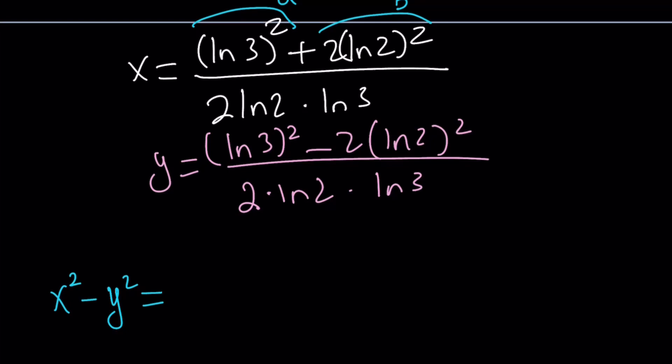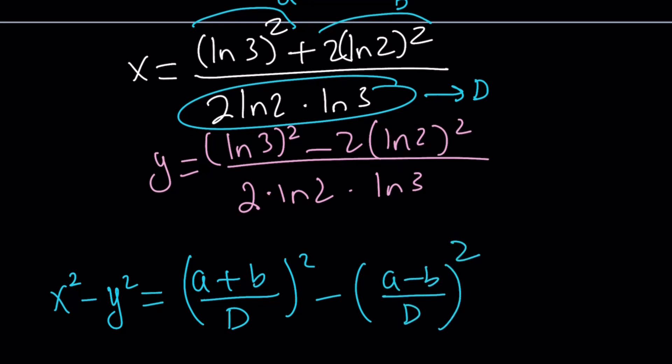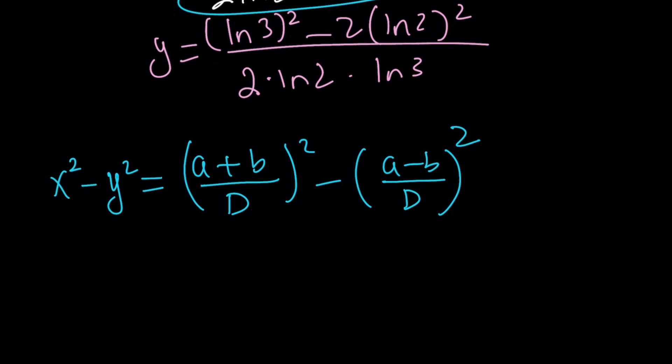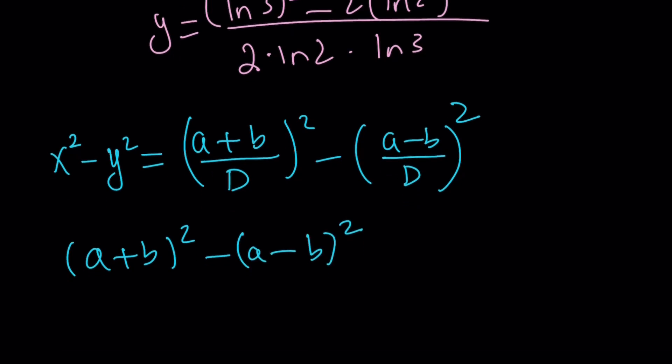When we subtract, we're going to subtract something like this: a plus b over the denominator, let's call this whole thing capital D, squared minus a minus b over D squared. That can be simplified a great deal. There is a well-known identity commonly used in algebra. When we subtract these two expressions, we get 4ab because a squared plus b squared cancels out, and we end up with 4ab. So we got 4ab over D squared.